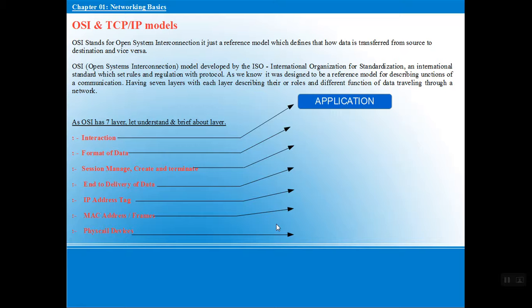Let's start with Topic 1: the OSI model. OSI stands for Open System Interconnection. It is a reference model that describes how data is transferred from one computer to another. It's developed by ISO, the International Organization for Standardization, and it defines protocols for how data flows from the top layer down to layer one. OSI has seven layers.